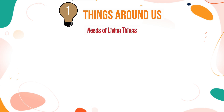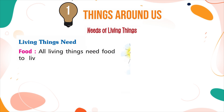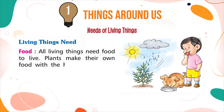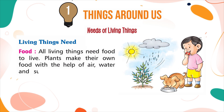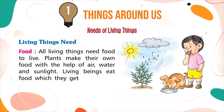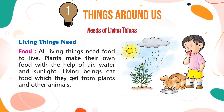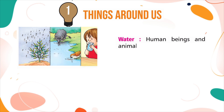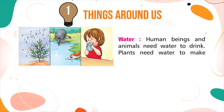Needs of Living Things. Living things need food. All living things need food to live. Plants make their own food with the help of air, water, and sunlight. Living beings eat food which they get from plants and other animals. Human beings and animals also need water to drink, and plants need water to make their food and grow.